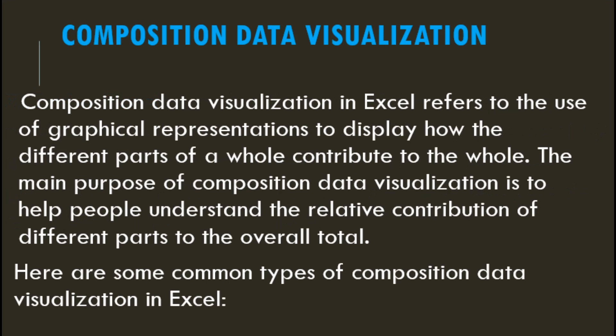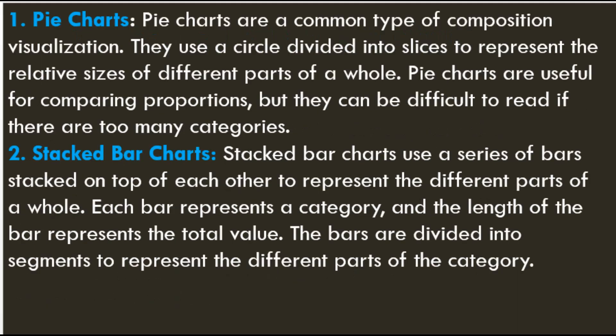Composition Data Visualization in Excel refers to the use of graphical representations to display how the different parts of a whole contribute to the whole. The main purpose is to help people understand the relative contribution of different parts to the overall total. 1. Pie Charts — a common type of composition visualization; they use a circle divided into slices to represent the relative sizes of different parts of a whole. Pie charts are useful for comparing proportions, but they can be difficult to read if there are too many categories. 2. Stacked Bar Charts — use a series of bars stacked on top of each other to represent the different parts of a whole; each bar represents a rectangle, and the length of the bar represents the total value, divided into segments for different parts of the category.